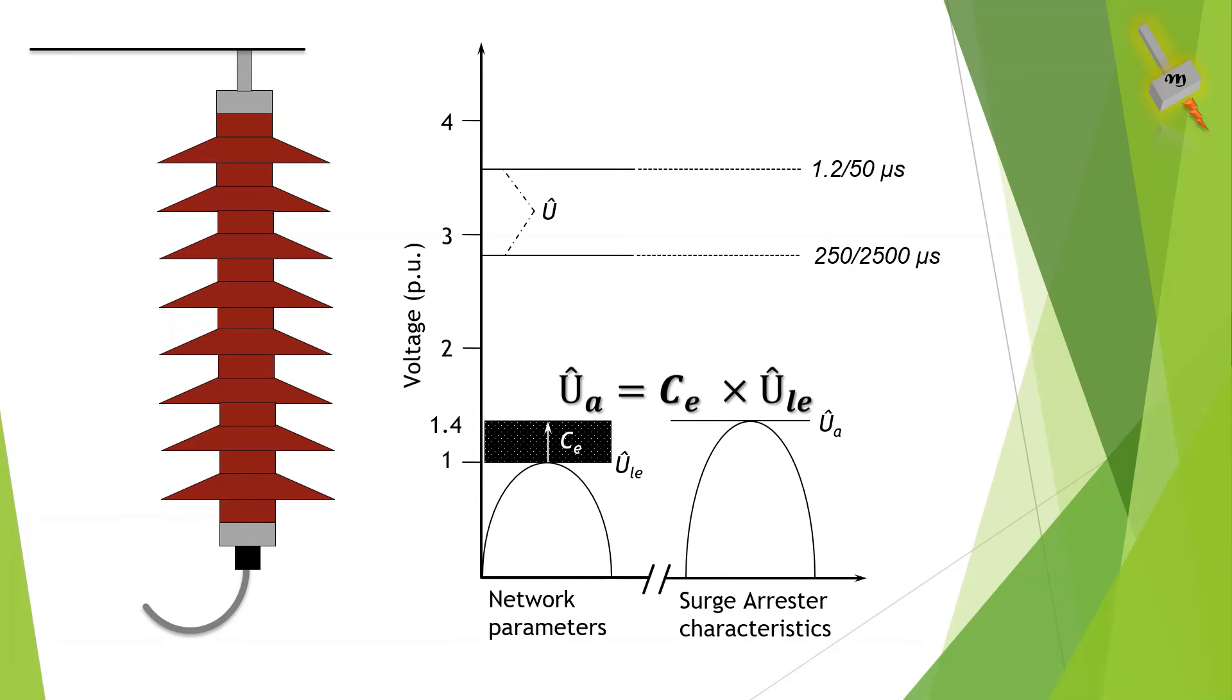Usually the earth fault factor is assumed to be 1.4 but system designers determine this based on the positive negative and zero sequence impedance of the system. To learn more on the earth fault factor we can take it in a different video.